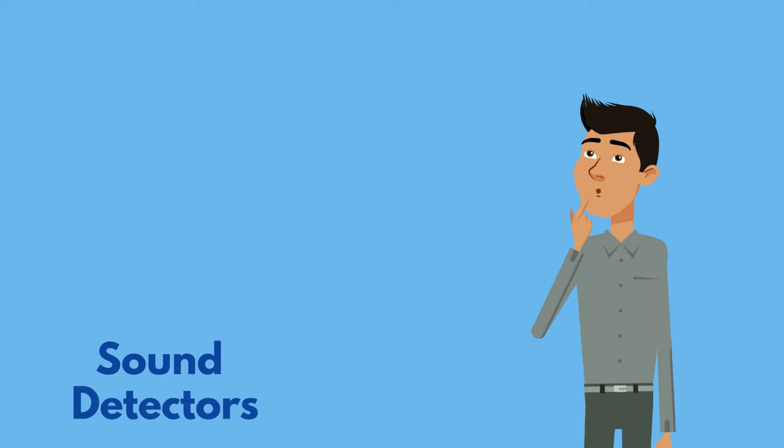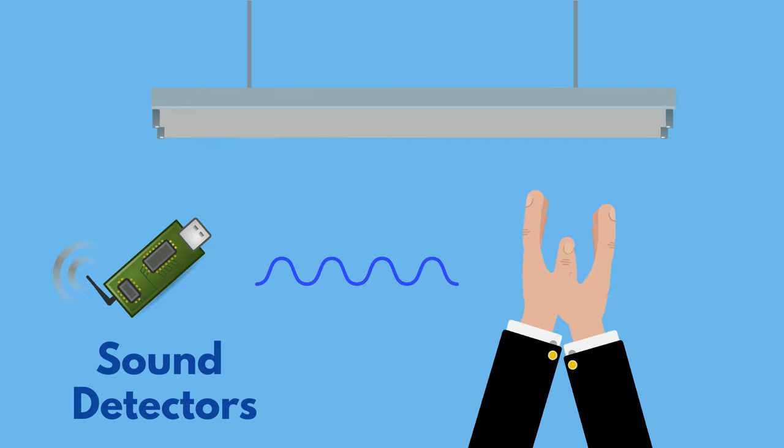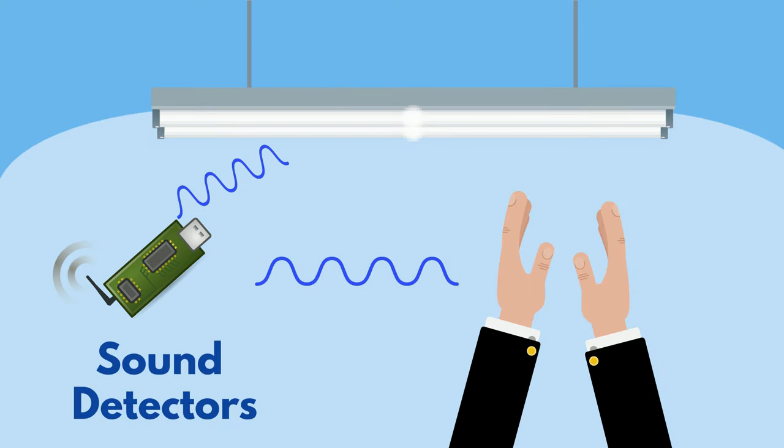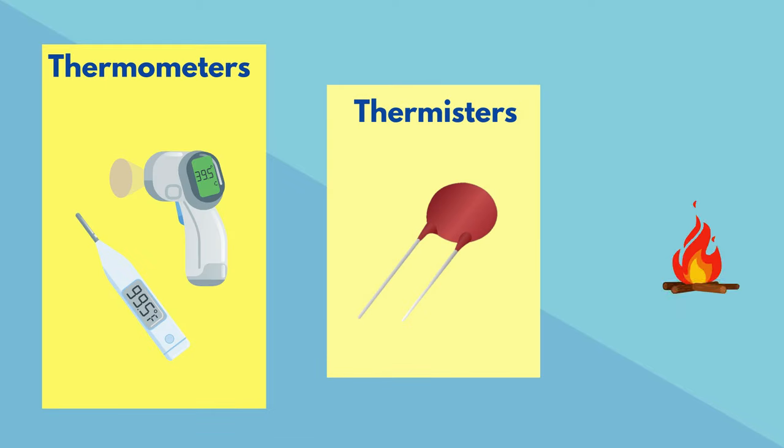For example, do you know how sound detectors work? They have this amazing ability to sense the audible vibrations in our environment that we hear as sound. Similarly, thermometers use electrical components known as thermistors to detect the heat energy around them, measuring the temperature.